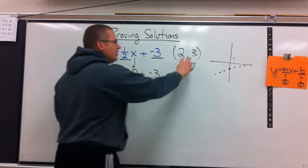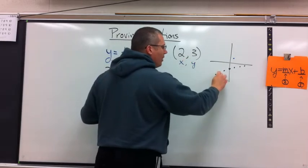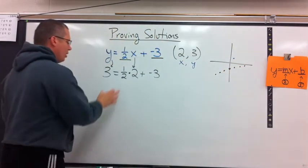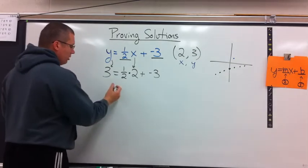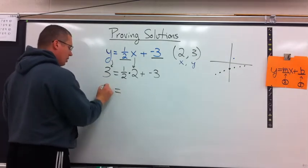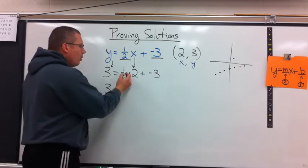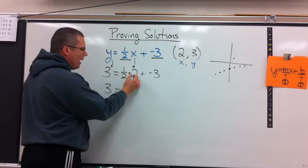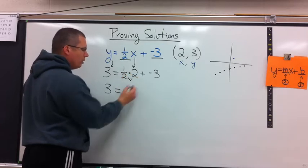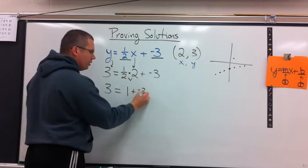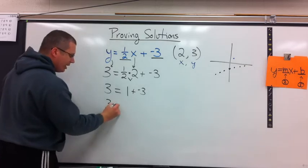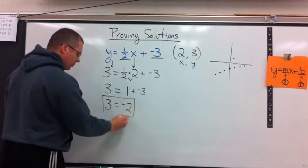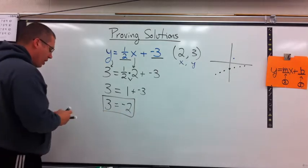Now if this is a solution, if it is one of my points that were on my line, then it will make my equation true. So let's check the left. 3 equals. What is order of operations? Multiply and add. Multiply first. 1 half times 2 is 1. Plus negative 3. Is this a true statement? Does 3 equal negative 2? The answer is no, it doesn't.